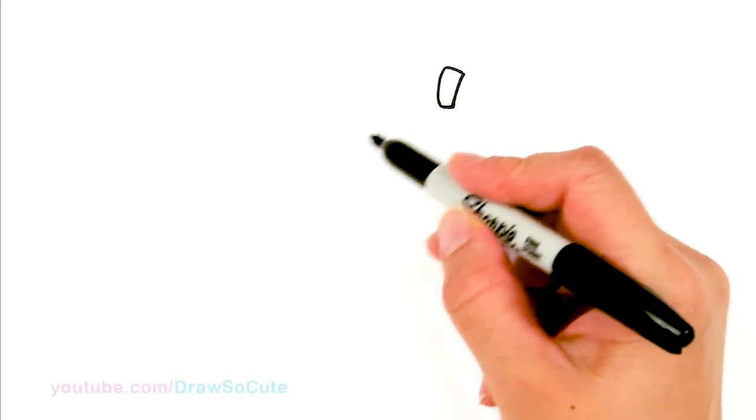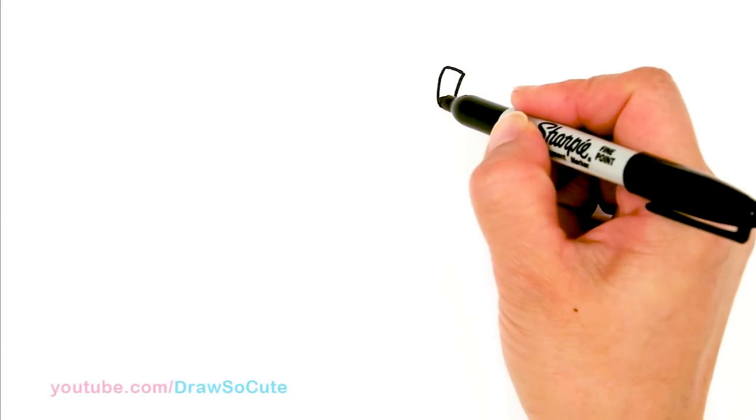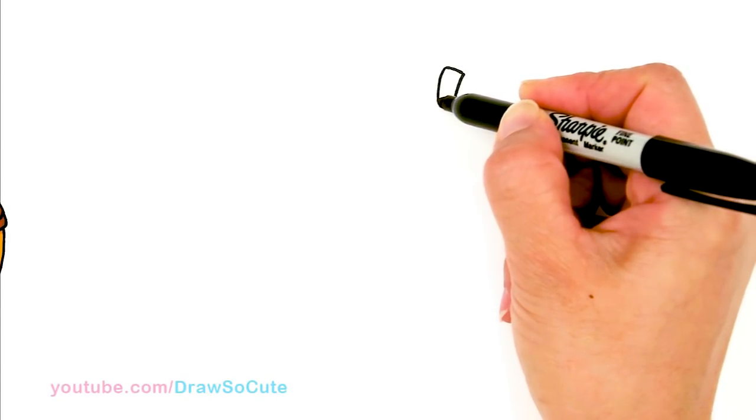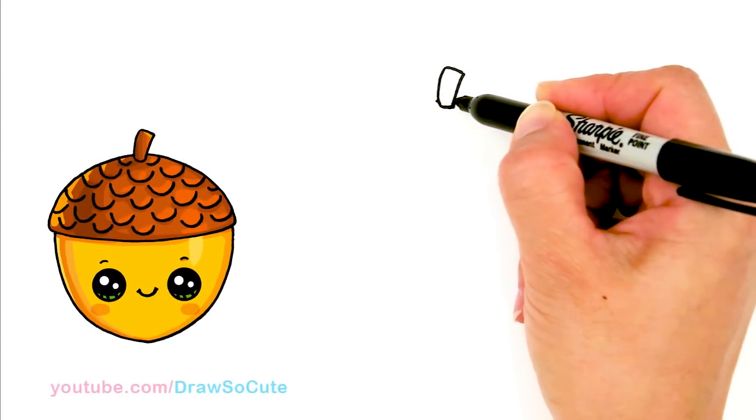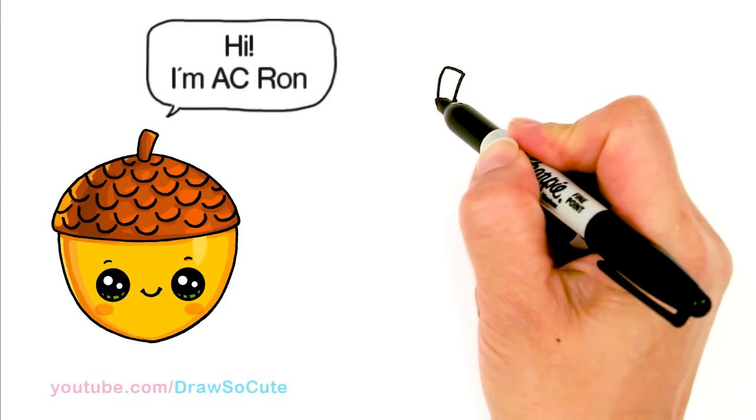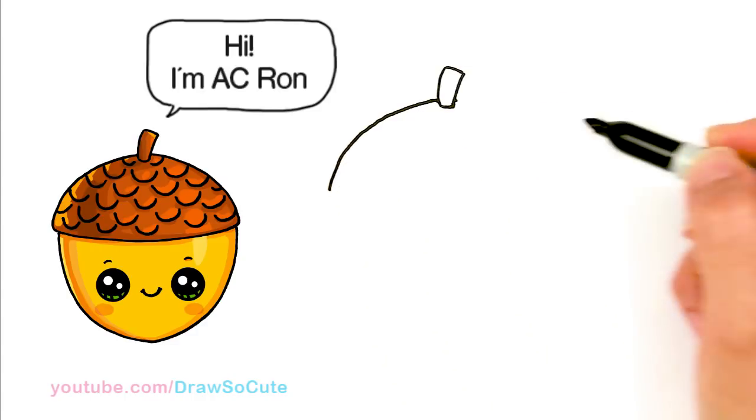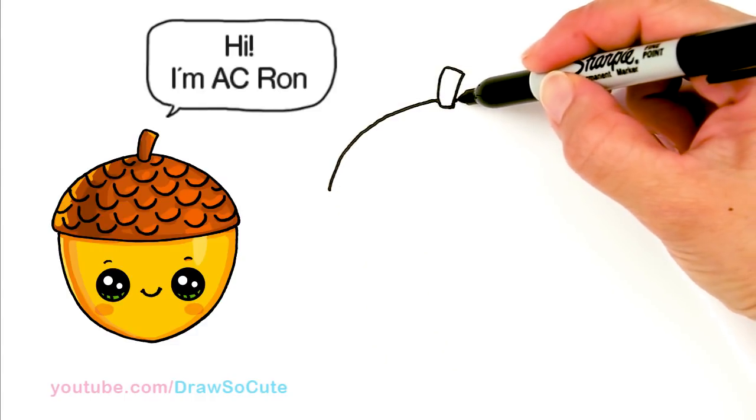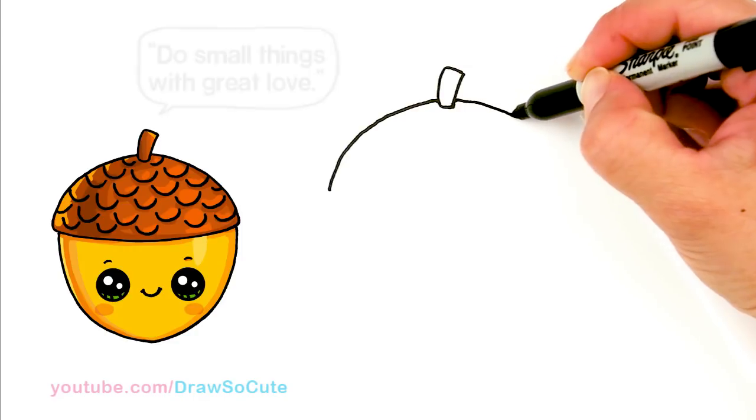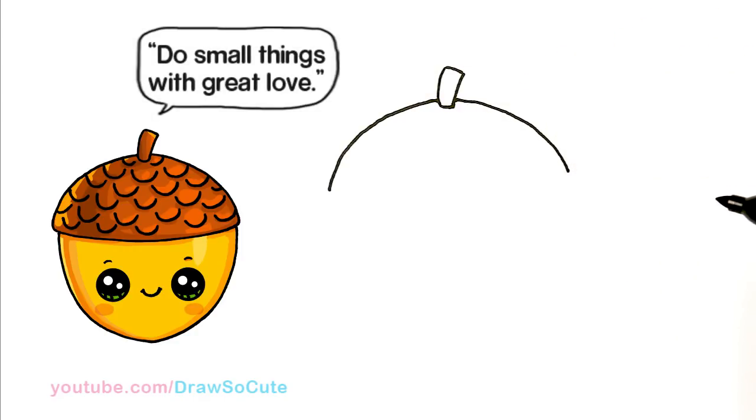And then from there, we're going to start to draw a big curve around it for the top of the acorn. So I'm going to come about right here, a little bit above, give myself two little points. So on both sides, it's going to continue a big curve. So I'm going to come down on this side, just a nice round curve. So you do the same thing on the other side. Nice round curve.